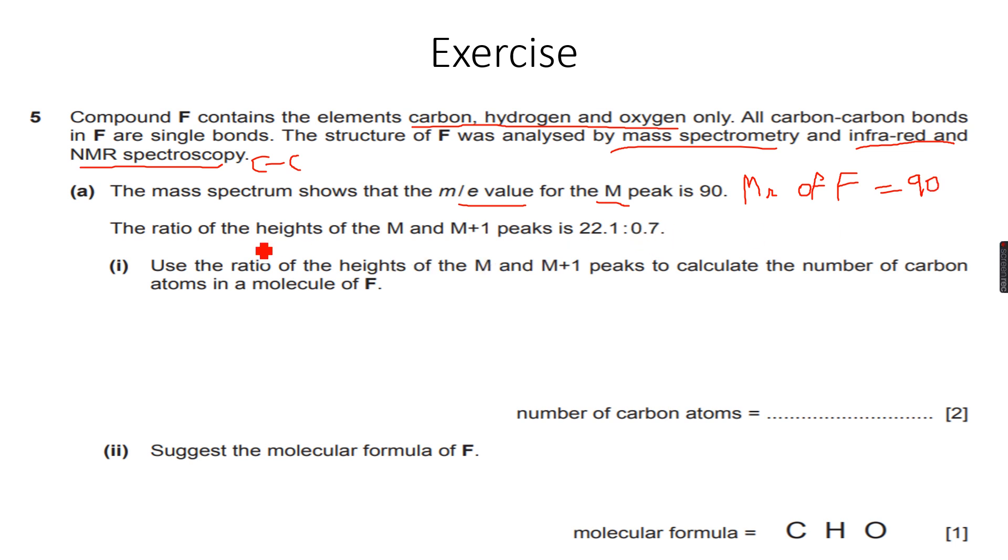So we know that the Mr is 90. The ratio of the heights of the M and M+1 peaks is 22.1 is to 0.7. So this is M is to M+1, which is 22.1 is to 0.7. So I know that again, going back to that equation, 1.1% of the carbon atoms will be carbon-13. So this is equal to my M+1 over M, which is - when I rearrange the formula, I get M is equal to 100 over 1.1 into M+1.